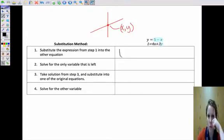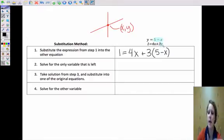Then we're going to substitute 5 minus x in for y. So this is how it's going to look. We're going to use the second equation. So 1 is going to equal 4x plus 3. Now instead of the y, we're going to use this expression, 5 minus x.